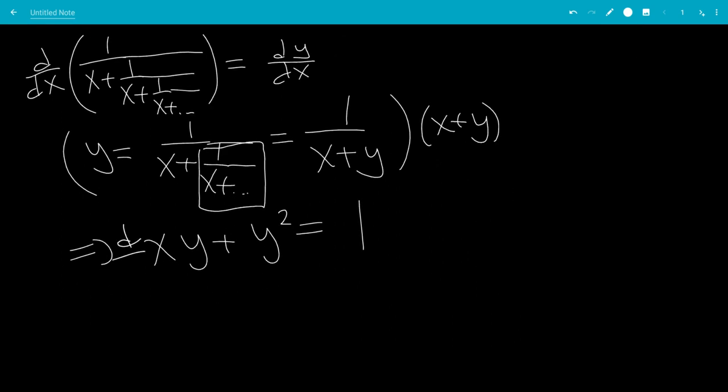And now we can take dy dx, d over dx on both sides. So this will be a product rule, leaving us with x times the derivative of y, which is dy dx, plus, so now we have to look at the derivative of x with respect to x, which is 1, times y, now plus the derivative of y squared.